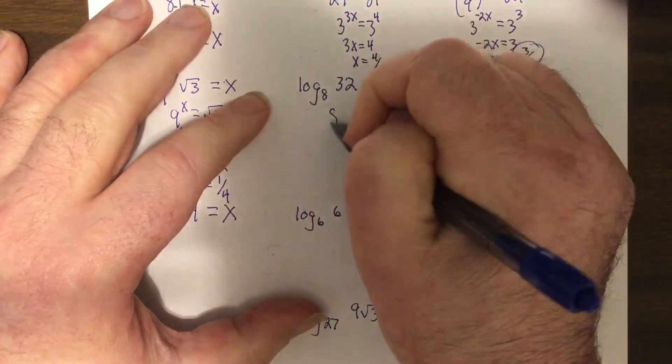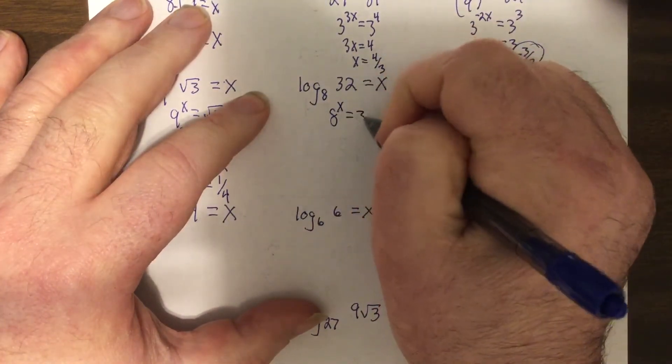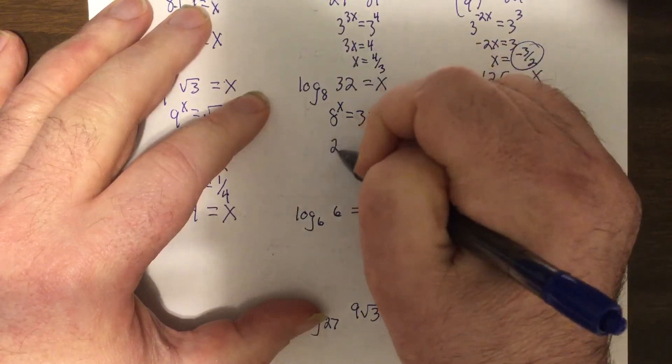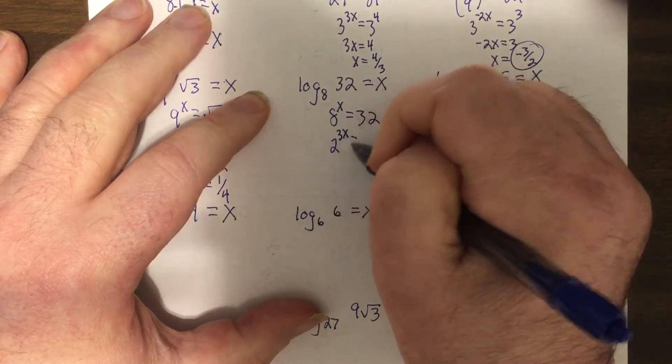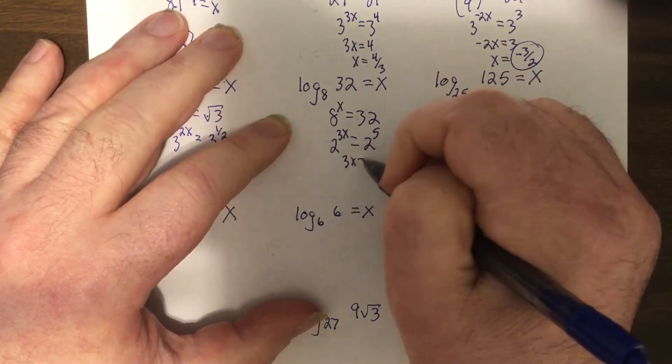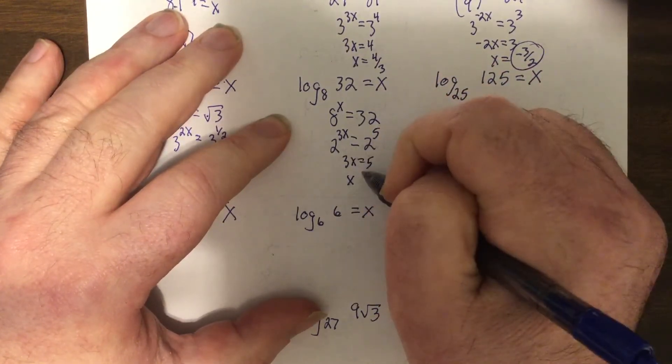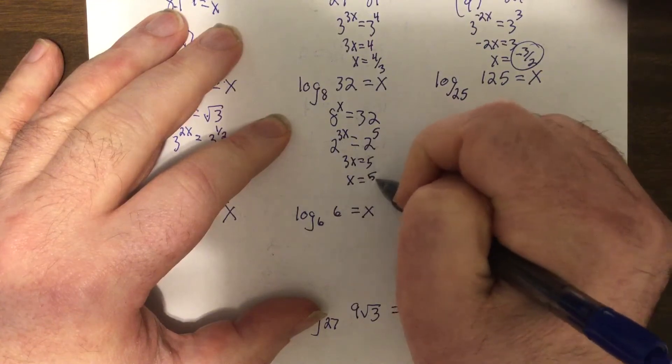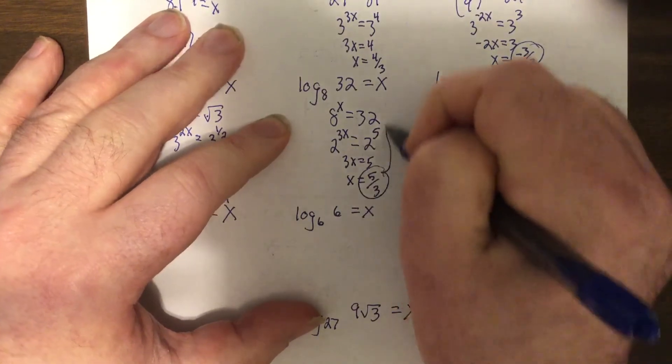Eight to the x equals thirty two, so two to the three x equals two to the five, so three x equals five, so x equals five thirds.